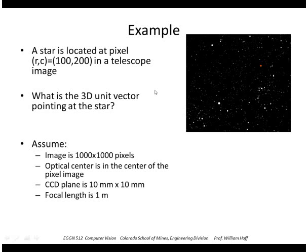Let's do an example. Let's say we have this image taken through a telescope of some stars. We have a star located at position 100, 200, so that's the row and column in the image, and we want to find the 3D unit vector pointing at the star.